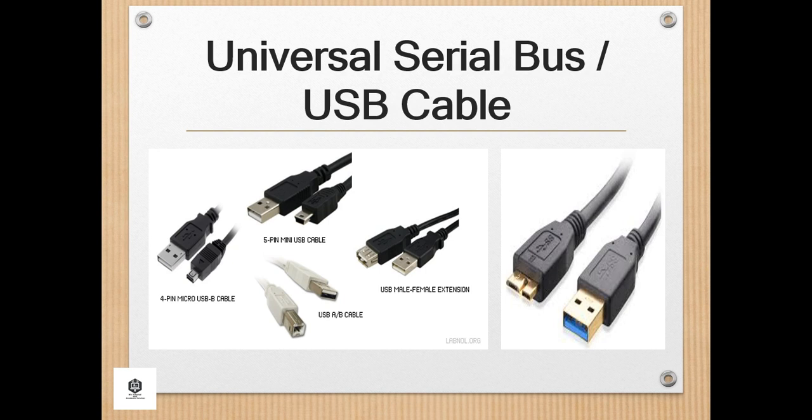To tell USB 2.0 and 3.0 ports apart: USB 2.0 ports have black tips, while USB 3.0 ports have blue tips. USB 3.0 is backwards compatible, meaning you can connect a USB 2.0 device to a USB 3.0 port or vice versa. There are also USB cables described as USB-A to micro-B, used to connect internal backup drives.